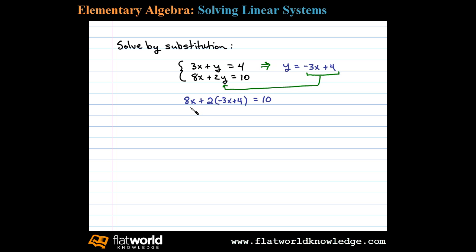When we do this, that leaves us with an equation with one variable that we can solve using algebra. We have to apply the distributive property: 2 times negative 3x leaves us with minus 6x, and 2 times 4 gives plus 8, equals 10. Combining like terms, 8x minus 6x adds up to 2x.